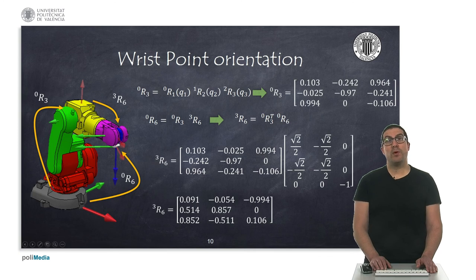Now we would like to compute the values for the last three joints. These joints can be computed by using the rotation matrix between the third and the sixth link, because this rotation depends purely on the values of these joints.